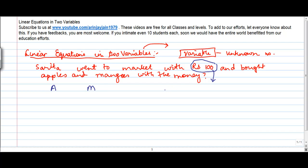Now, if we were to be asked what is the cost of apples and mangoes, we don't know. But what we know is that let's say she spent rupees x on apples and rupees y on mangoes. So we know that the sum of x plus y is equal to 100.